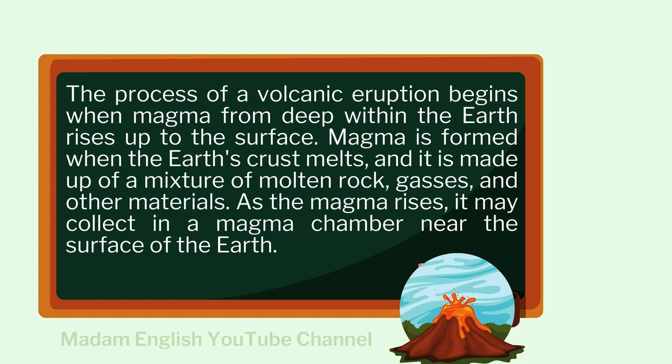The process of a volcanic eruption begins when magma from deep within the earth rises up to the surface. Magma is formed when the earth's crust melts, and it is made up of a mixture of molten rock, gases, and other materials. As the magma rises, it may collect in a magma chamber near the surface of the earth.